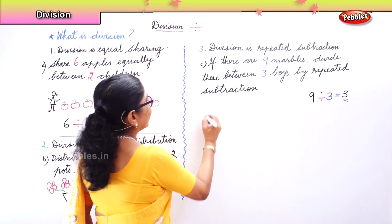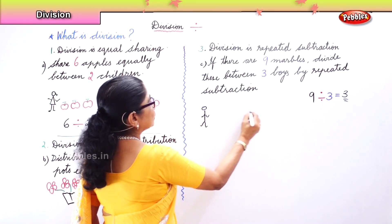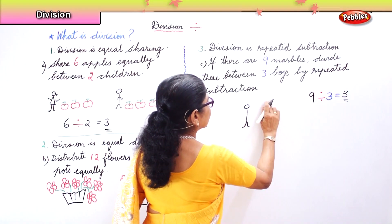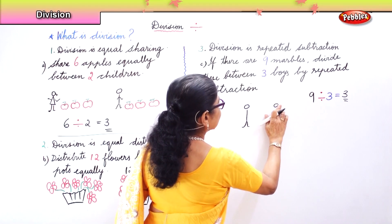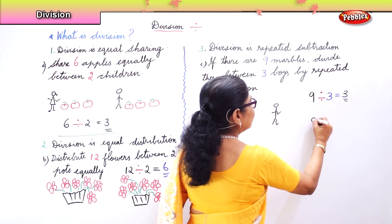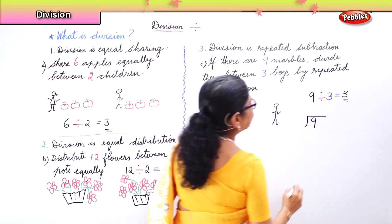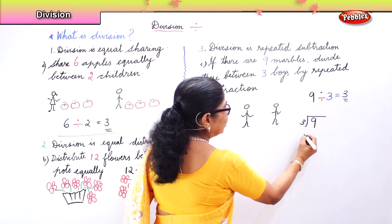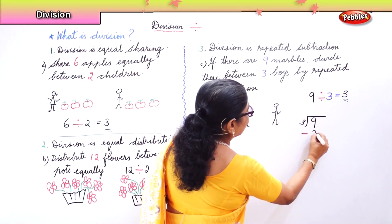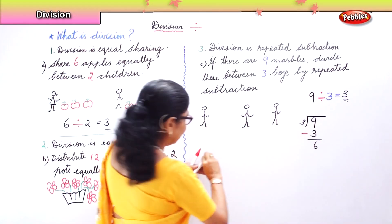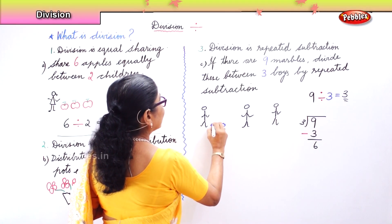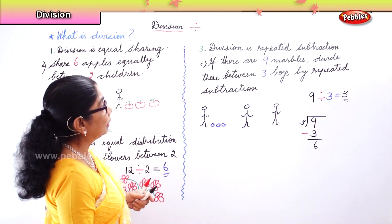Here are the boys. First boy is here, another boy here, another boy here. We are going to divide nine by three. First, we will give the first marble minus three. We are going to give it to the first boy. So let's give the first three marbles to the first boy. Here are the marbles — three marbles.